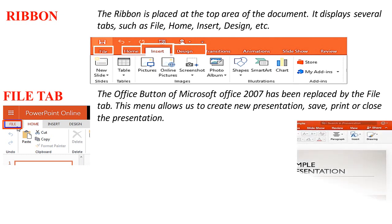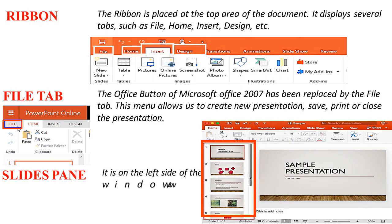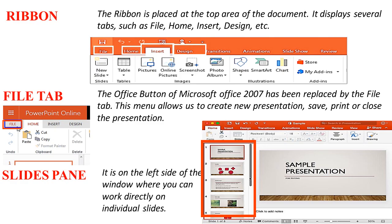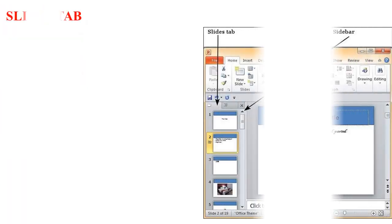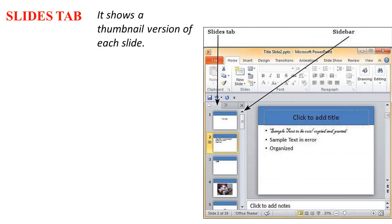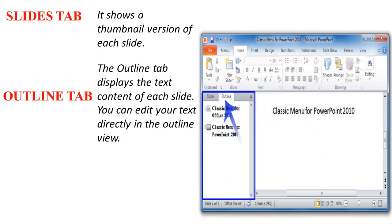Slides Pane: It is on the left side of the window where you can work directly on individual slides. Slides Tab: It shows a thumbnail version of each slide. Outline Tab: The Outline Tab displays the text content of each slide. You can edit your text directly in the Outline View.